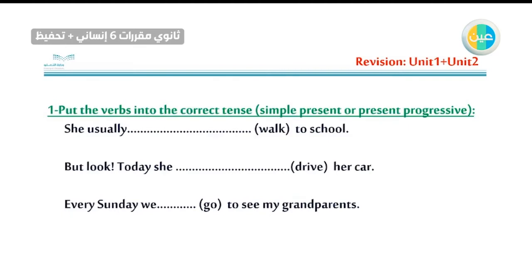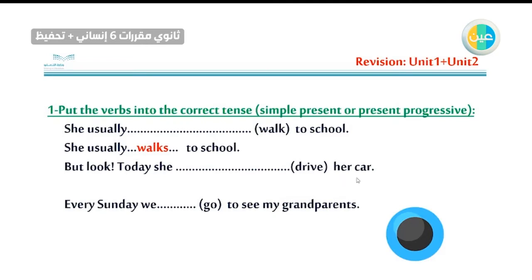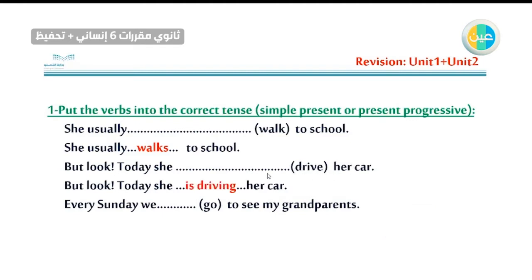Number four: 'She usually walk to school.' From the word 'usually,' it's present simple — daily routine or habit. She usually walks to school. But: 'Today, she drive her car.' This is something happening now, not her routine. Present progressive: after 'she,' add the helping verb, then the main verb with -ING. Today she is driving her car. When the verb ends with E, delete the E then add -ING.